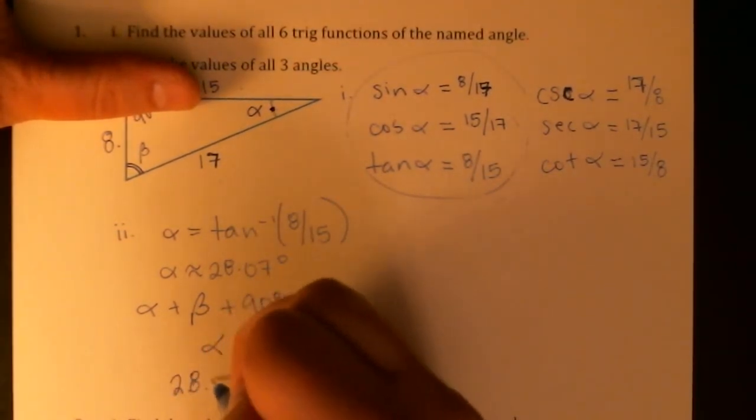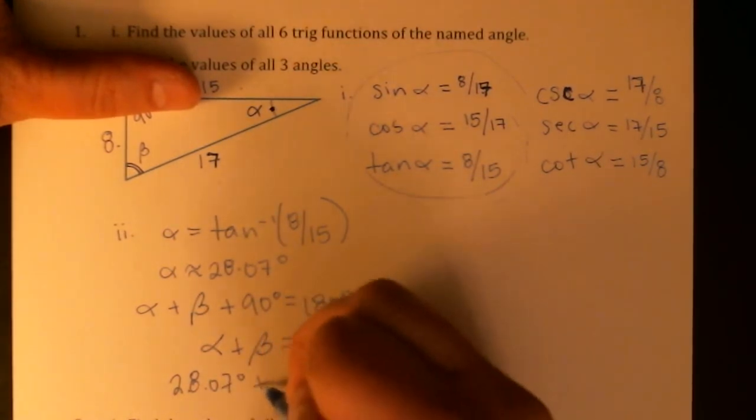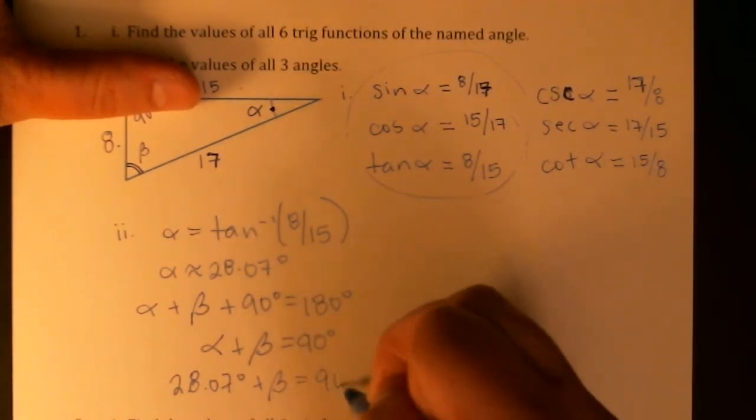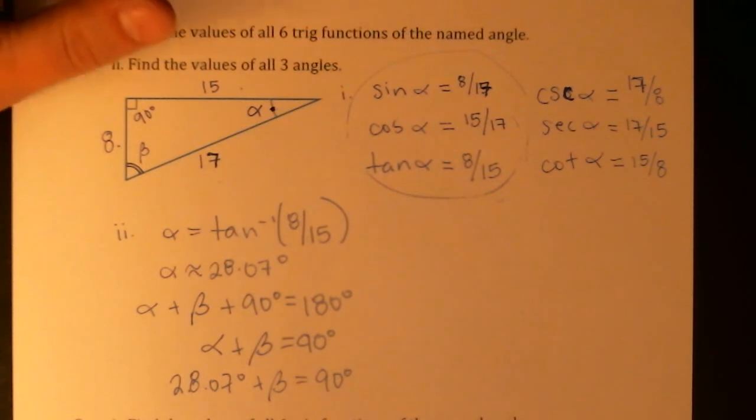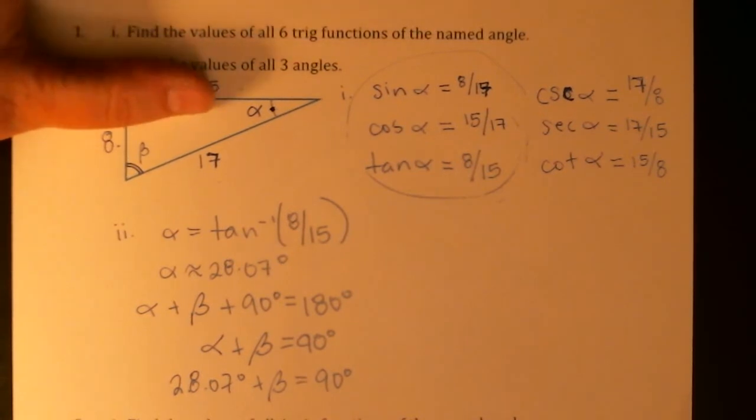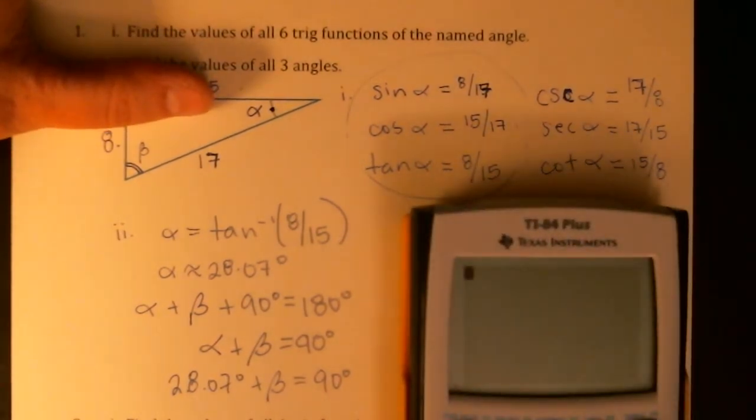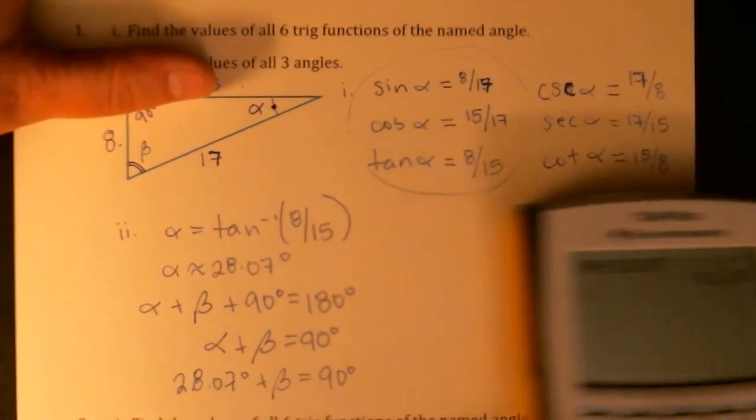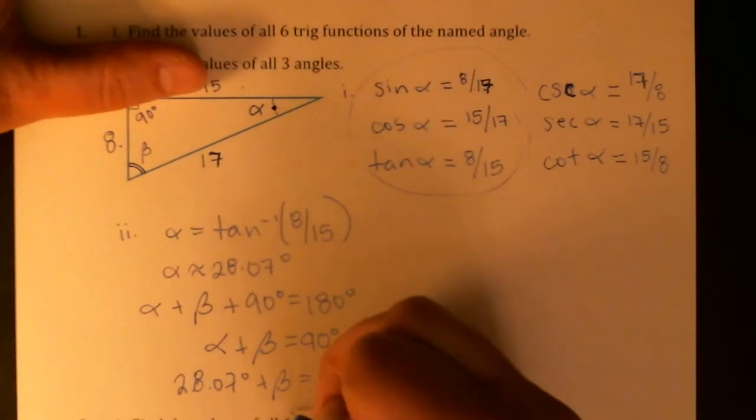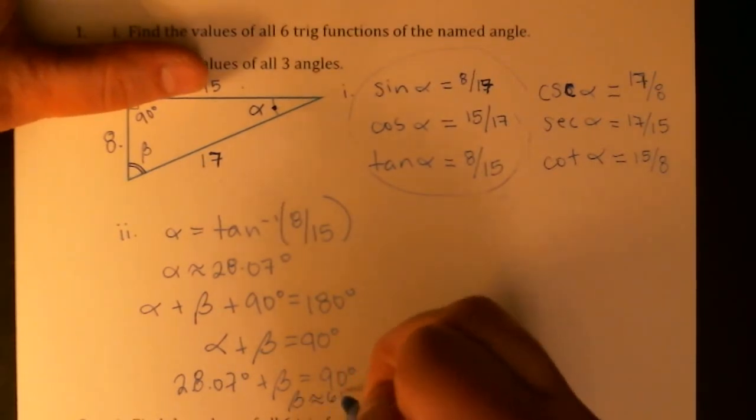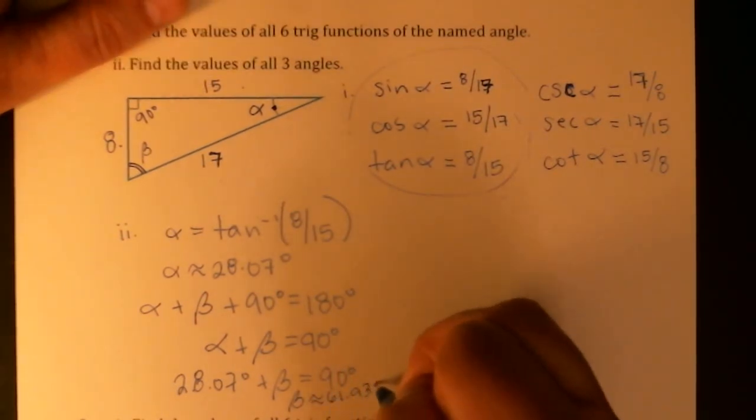And now that we have an estimate for alpha, 28.07 degrees plus beta is equal to 90 degrees. We just have to subtract. And what are we going to get there? So 90 minus 28.07, 61.93.